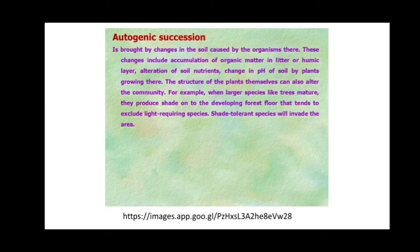Autogenic succession is brought about by changes in soil caused by organisms. These changes include accumulation of organic matter in the litter or humic layer, alteration of soil nutrients, and change in soil pH by growing plants. The structure of plants themselves can also alter the community — for example, as larger tree species mature, they produce shade on the forest floor that excludes light-requiring species, allowing shade-tolerant species to invade the area.